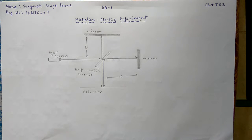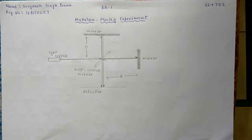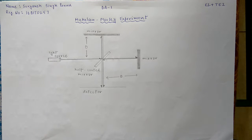Hello guys, my name is Suryansh and I am going to explain about the Michelson-Morley experiment. It was a scientific experiment to find the presence and properties of a substance called Ether, a substance believed to fill empty space. This experiment was done by Albert Michelson and Edward Morley in 1887.